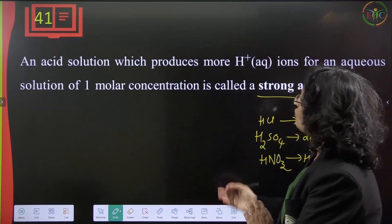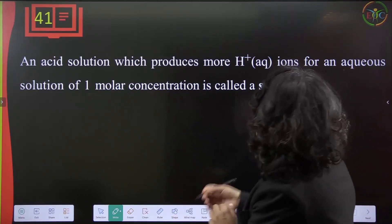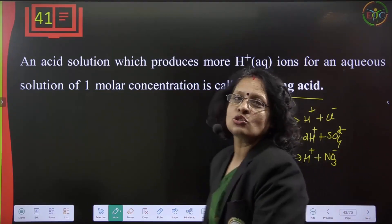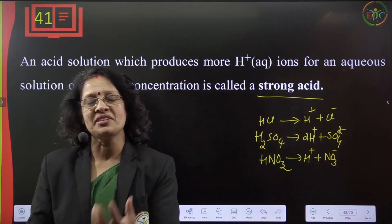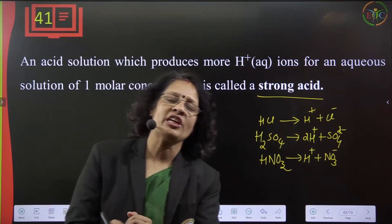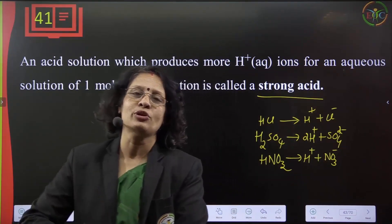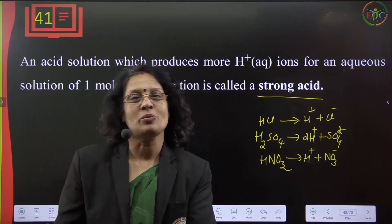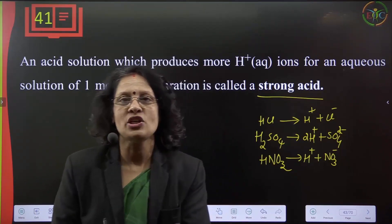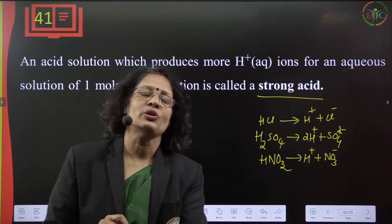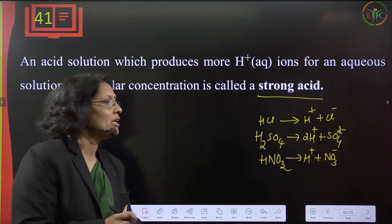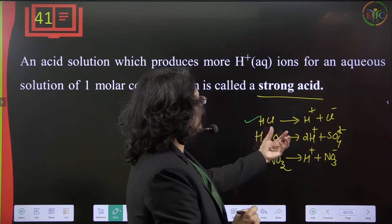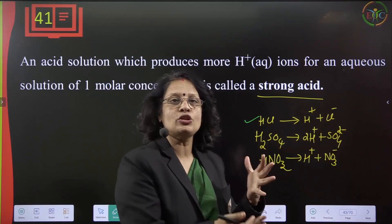An acid which produces more H⁺ ions in an aqueous solution of one molar concentration is called a strong acid. Strong acids ionize completely, giving a large number of H⁺ ions. Weak acids ionize only partially, giving fewer ions, with some undissociated molecules also present.